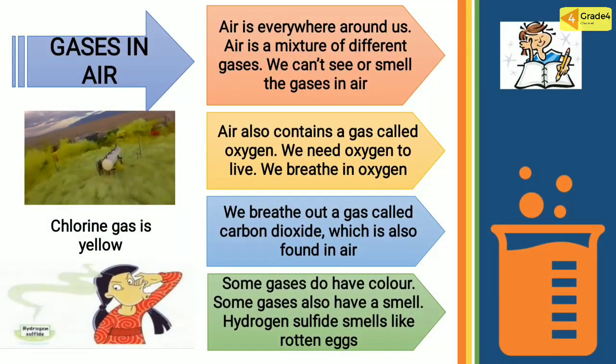Gases in air. Air is everywhere around us. Air is a mixture of different gases. We cannot see or smell most gases in air. Air also contains a gas called oxygen — we need oxygen to live. We breathe in oxygen and breathe out a gas called carbon dioxide, which is also found in air. Some gases do have color, like chlorine. Chlorine gas is yellow. Some gases also have a smell, like hydrogen sulfide, which smells like rotten egg.